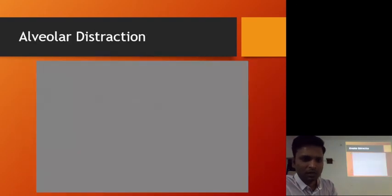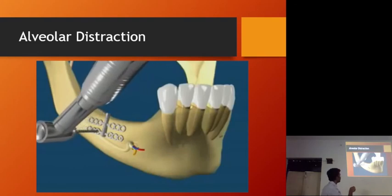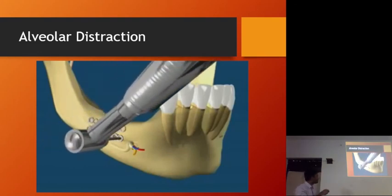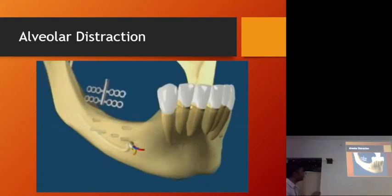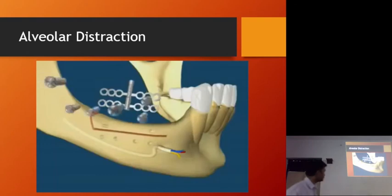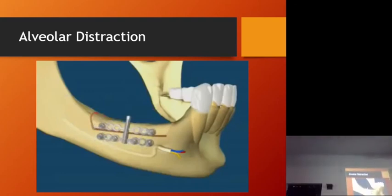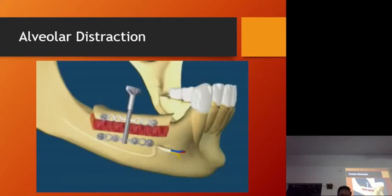They are creating holes for screws before placing the cut. Once they have created the holes, they remove the distractor device and perform the cut. This is a vertical distractor — it moves up and down. One plate attaches to the upper segment, one to the lower. When we activate the distractor, it pulls apart both segments, and we achieve increased height. Fibrous callus forms, then we allow it to ossify and achieve ideal bone height.